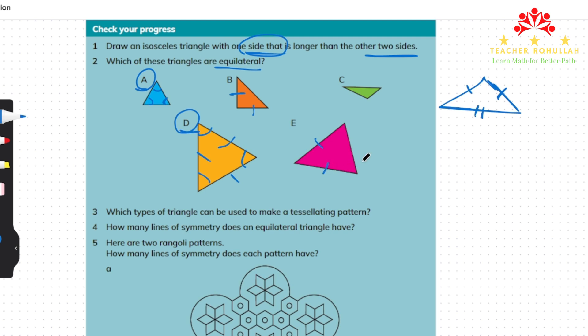We are done with question 2. In question 3 it says: which type of triangle can be used to make a tessellating pattern? I can say that all three types of triangle can be used to make a tessellating pattern. A tessellating pattern is a pattern made by putting or arranging 2D shapes side by side forming a pattern.